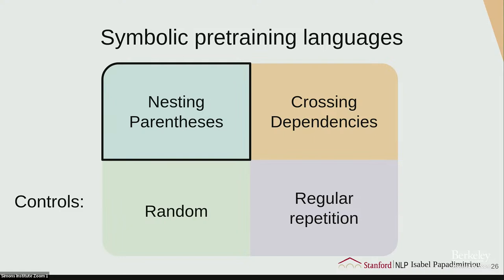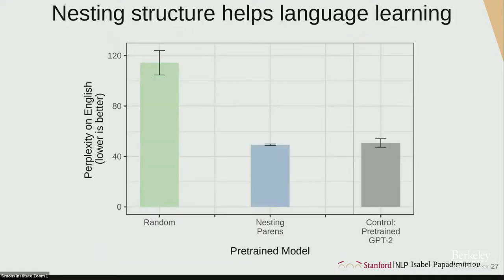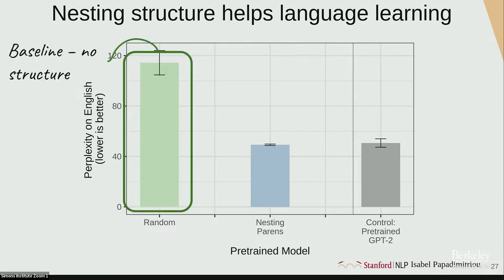Now the results of our pre-train then fine-tune paradigm. Taking nesting structure: nesting actually helps language learning. The y-axis is perplexity — widely used in NLP — where lower is better. It's roughly a measure of how confused you are when generating the next word. On one side we have our random baseline with no structure, which is pretty bad. On the other side is GPT-2 with its vocabulary swapped out, representing the complex structure of English. Nesting parentheses performs much better than the random baseline and on par with the top line.